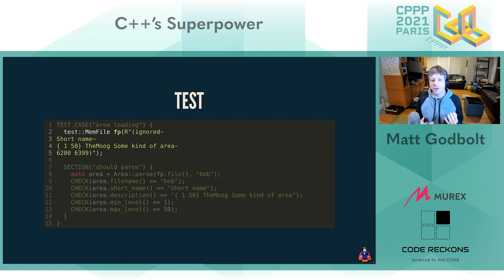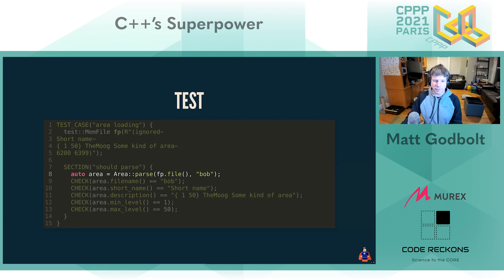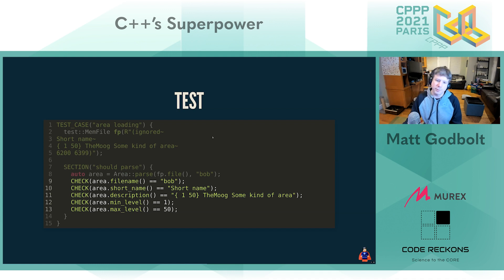I like to use Catch2 as my testing framework. One trick: if legacy code is dialed into using C-style `FILE*`, on Unix-based systems you can create a `FILE*` from just a chunk of RAM using `fmemopen` or similar. I wrapped that in a little class called `test_mem_file` — it lets me make a `FILE*`-like thing that the C code can consume, but I can control without actually writing a file to disk. This makes it a proper unit test rather than an integration test. The area file format uses tilde-delimited strings, which I can represent nicely with C++ raw string literals.